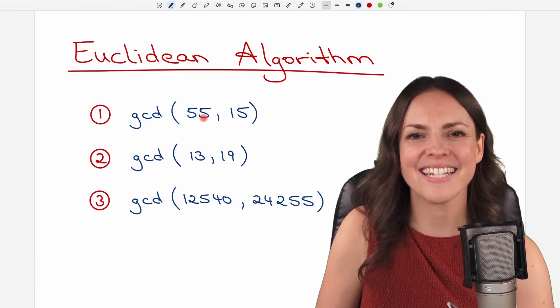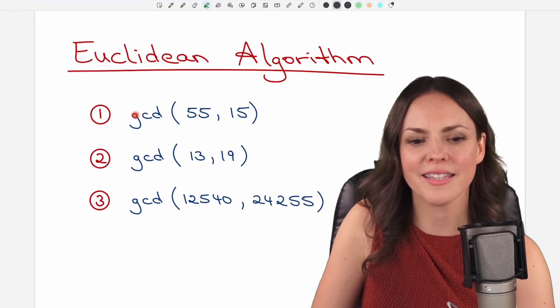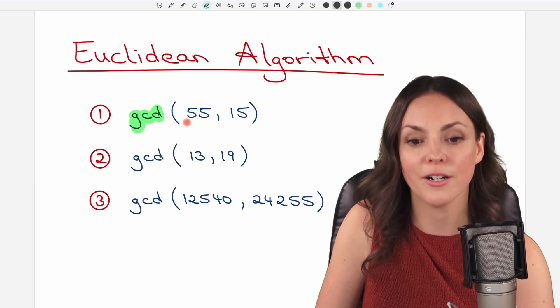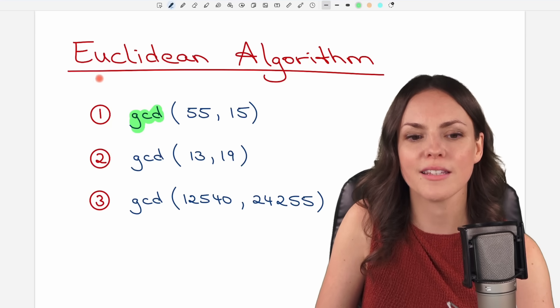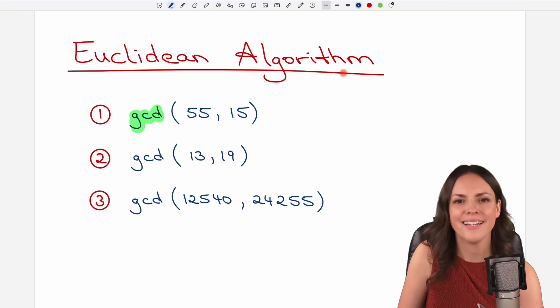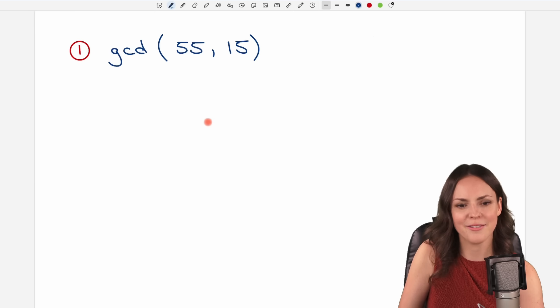Hello my lovelies, it's Susanna and today I want to show you how to find the greatest common divisor of two numbers using the Euclidean algorithm. We're going to take a look at these three examples together, so let's start with the first one.